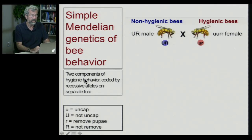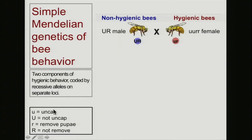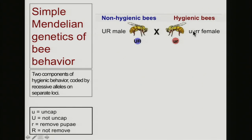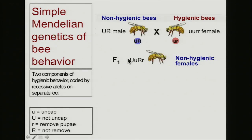There are two components of hygienic behavior, each coded by recessive alleles on separate loci. Some bees uncap cells in the hive, while others remove pupae. If we cross a non-hygienic bee with a hygienic bee, the non-hygienic one produces gametes that are dominant U and dominant R — these are the 'lazy' alleles. The hygienic alleles are recessive. Crossing a double dominant with a double recessive gives all heterozygous offspring, which are non-hygienic since they carry only a single copy of each recessive allele.